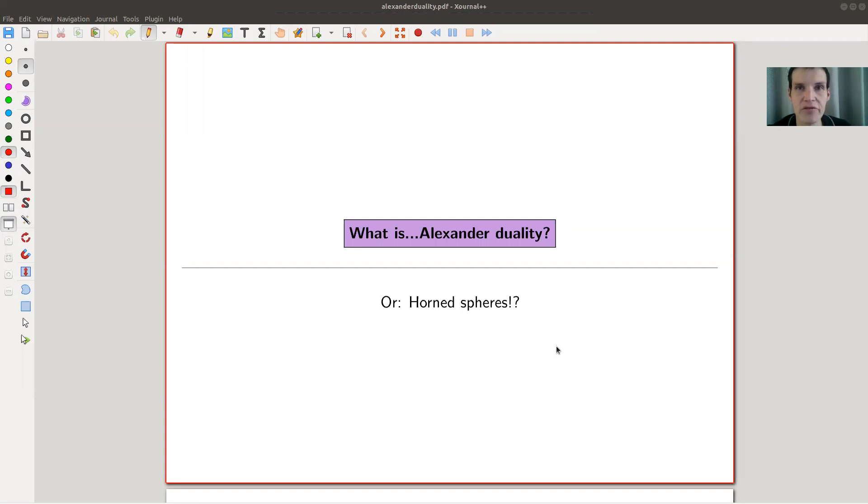Okay, welcome everyone to my continuation of what is algebraic topology. Today in duality, in algebraic topology there are plenty of dualities. Poincaré duality is the most famous one, but this one is also pretty cool. It's called Alexander duality.